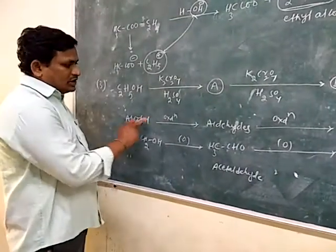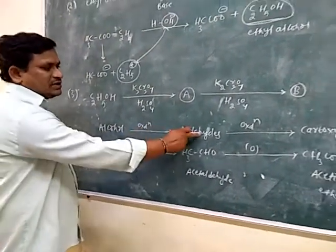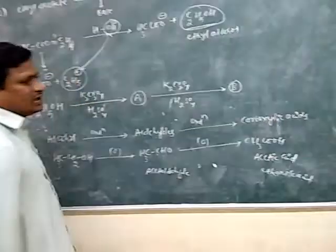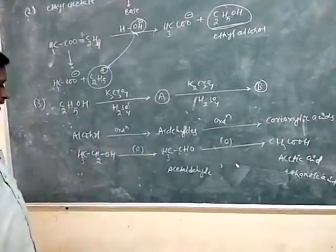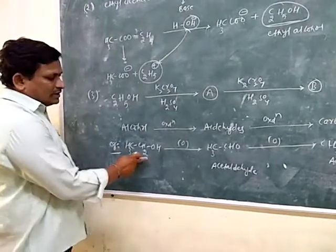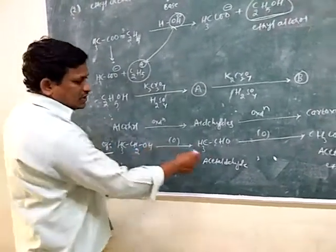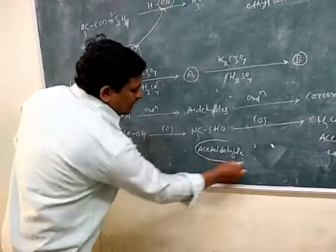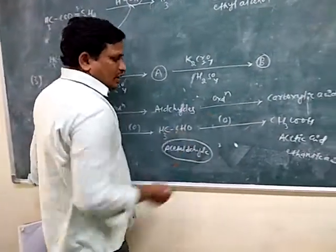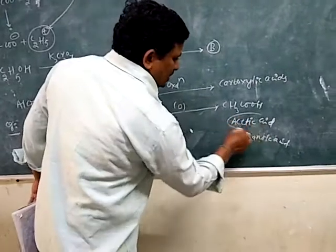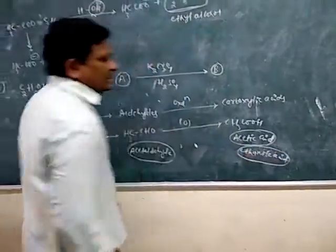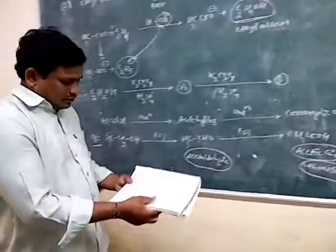So alcohols involved in oxidation reaction give aldehydes. Aldehydes involved in oxidation reaction give carboxylic acids. As explained in this example, ethyl alcohol oxidized gives acetaldehyde (compound A), and acetaldehyde further oxidized gives ethanoic acid (compound B).